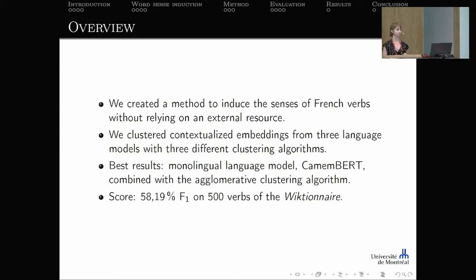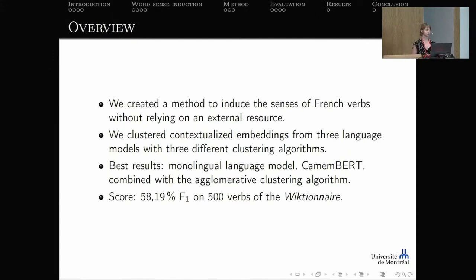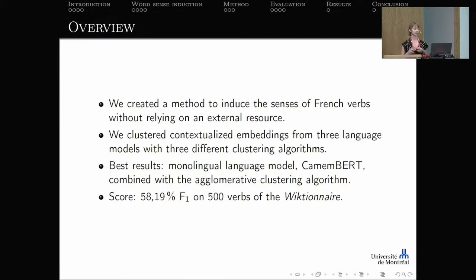Here is a quick overview of the presentation. A method was created to induce the senses of French verbs without relying on an external resource. For that, contextualized embeddings taken from three language models were clustered using three different clustering algorithms. The best results were achieved with the monolingual language model CamemBERT — trained only on French data — combined with the agglomerative clustering algorithm, obtaining an F1 score of 58.19% on 500 verbs.